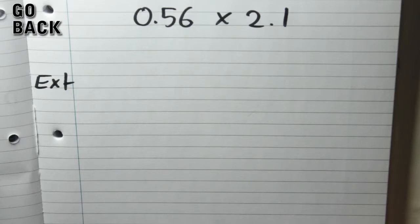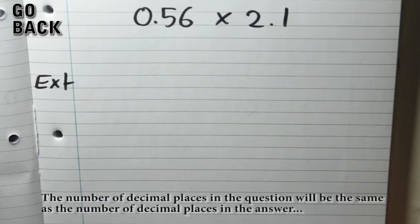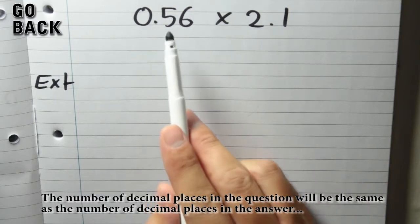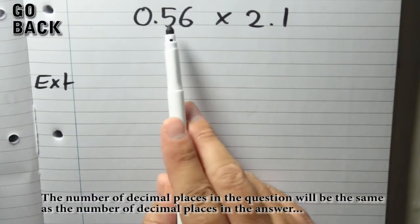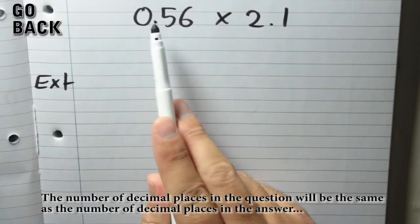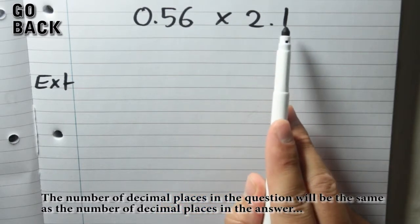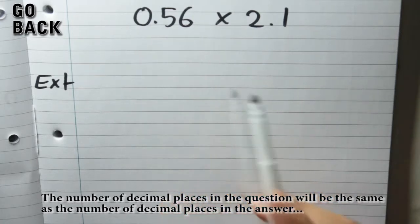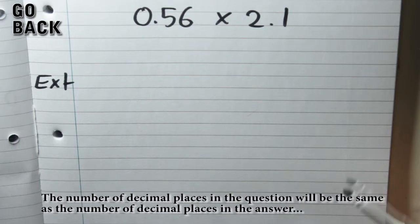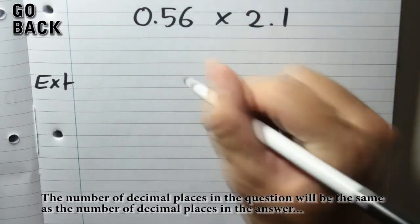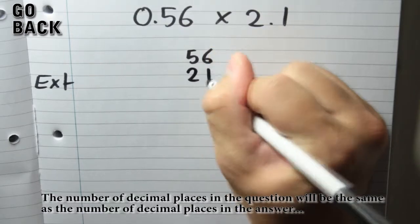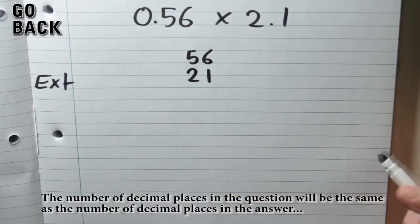For our extension question, we're going to look at multiplying decimals. The important thing to remember is that the number of decimal places in the question will be the same as the number of decimal places in our answer. For example, 0.56 has 2 decimal places, whereas 2.1 has 1 decimal place. So our question has 3 decimal places in it, and our answer will also have 3 decimal places. Now I'm going to work it out using the column method — you can use the box method if you want — by doing 56 times 21, totally ignoring the decimal places.